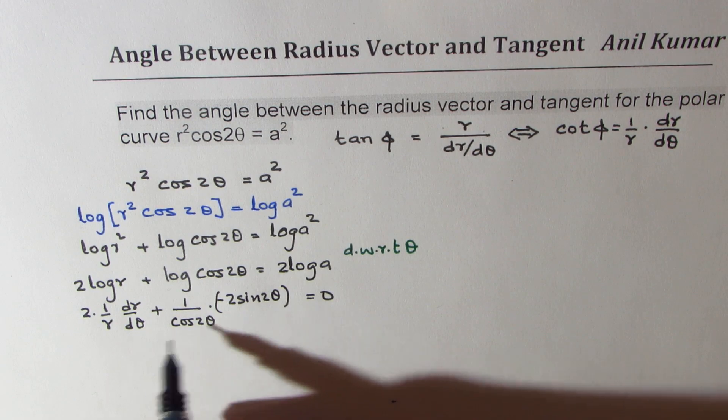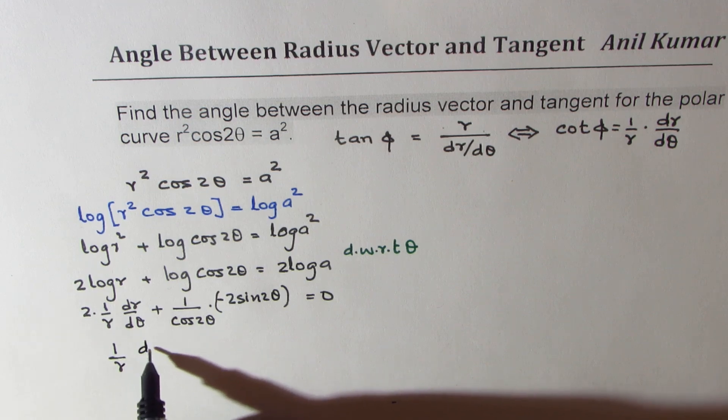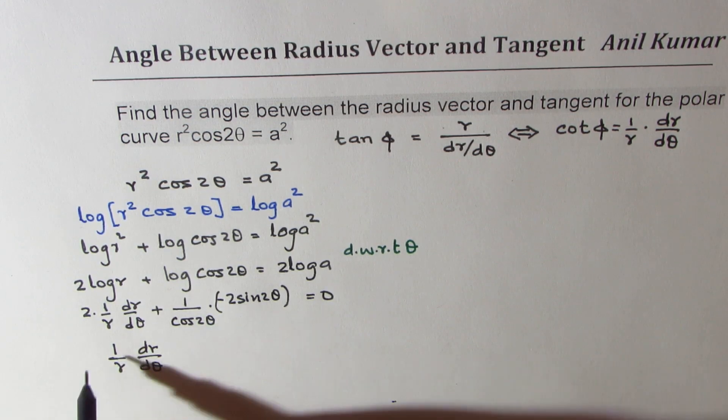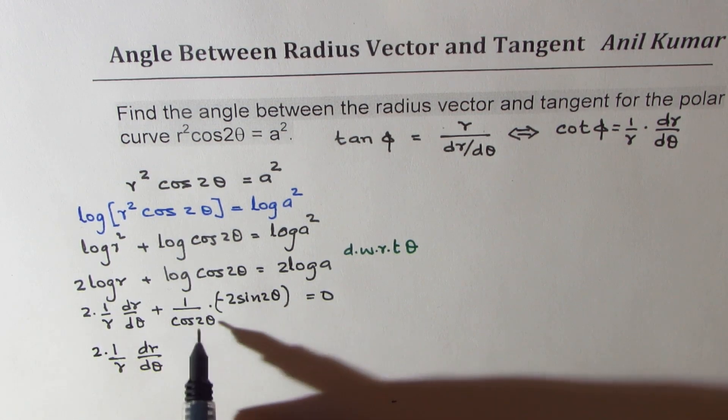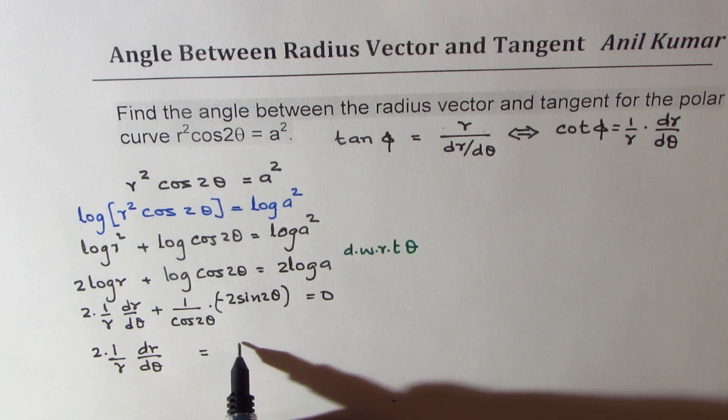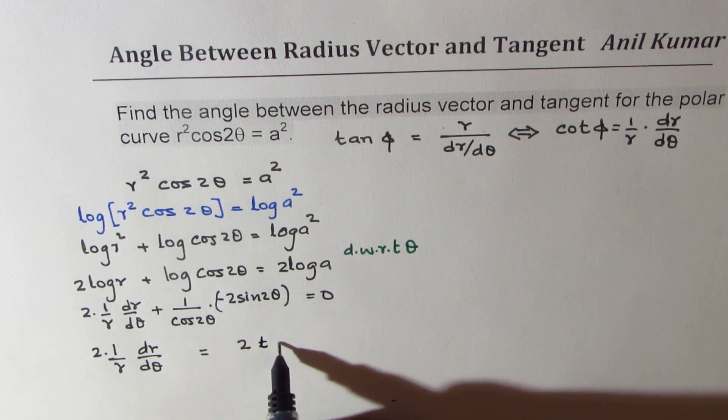So we could write, let's rearrange and we could write this as 1/r dr/dθ. We can take, let's write 2 here for the time being. Let's take this term to the right side. We get 2 sin 2θ over cos 2θ is tan 2θ. Correct.